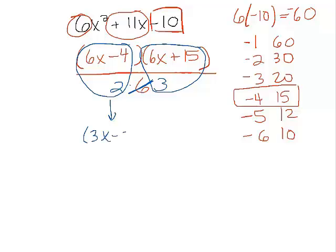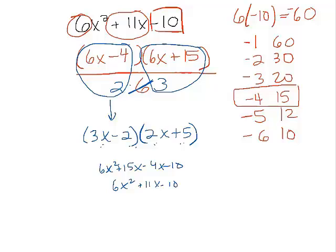We get 3x minus 2. And we get 2x plus 5. Now, let's see. If you don't believe me, let's just multiply it and see what we get. That gets me 6x squared plus 11x minus 10. I don't know.